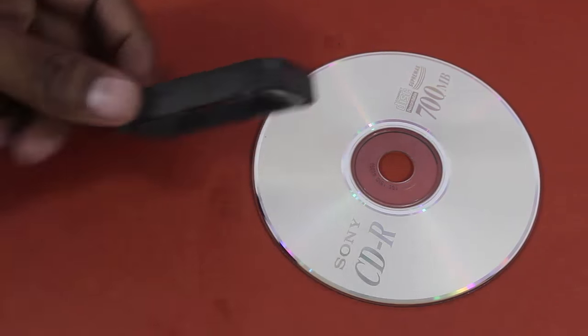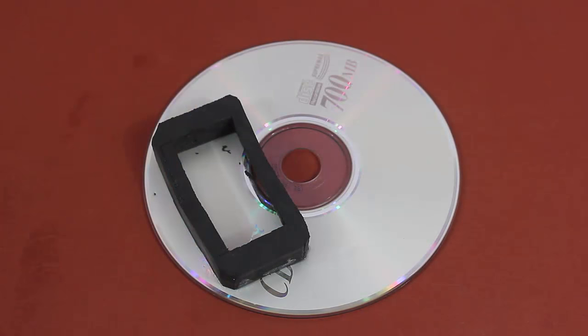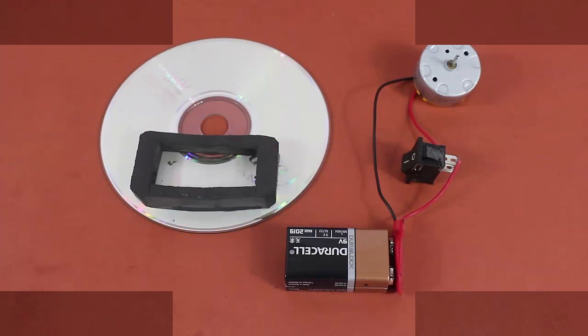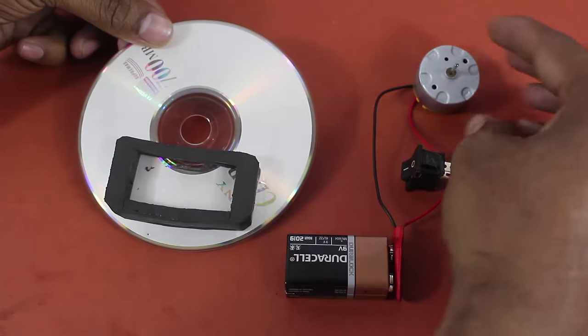Stick a rubber frame to an old CD. The frame will house the 9V battery. Fix the motor in the center of the CD with strong glue.